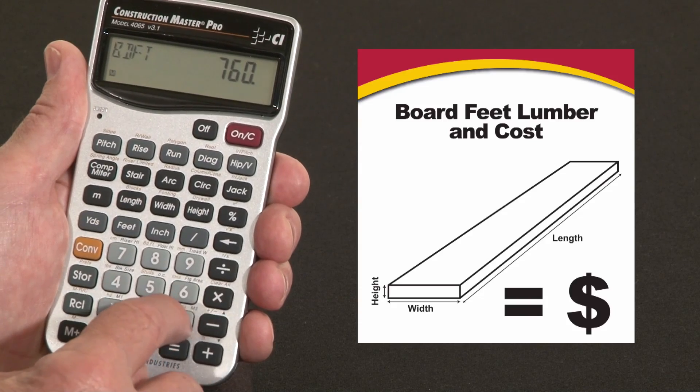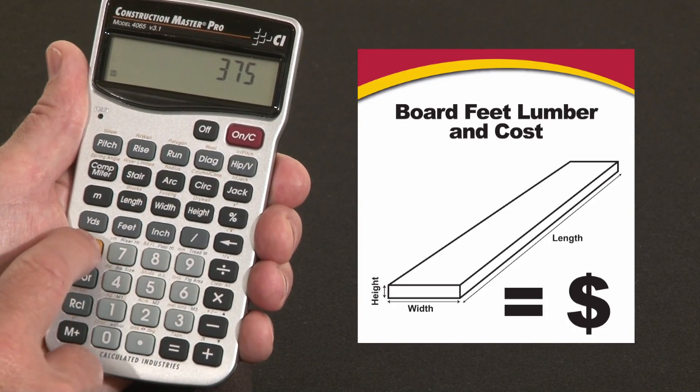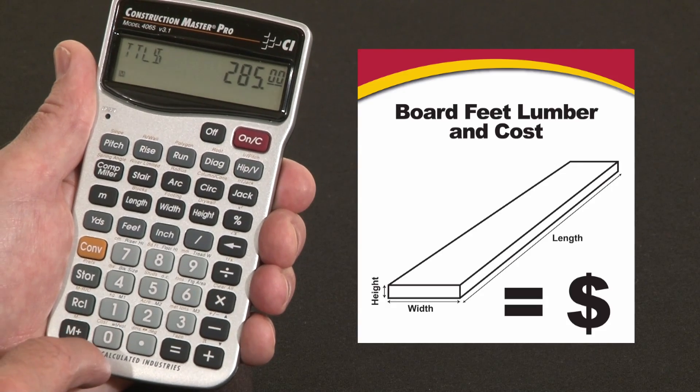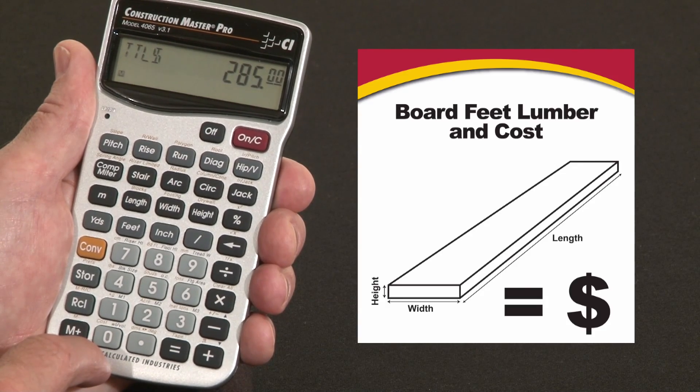So I would say times 375 convert, over the zero key is the cost function. So that would be $285 worth of lumber.